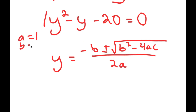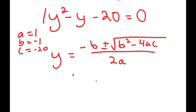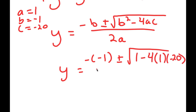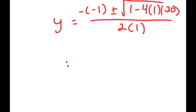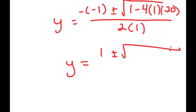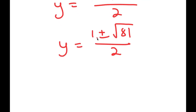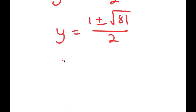The quadratic formula is negative b plus or minus the square root of b squared minus 4ac all over 2a. In this case, a is 1, b is negative 1, and c is negative 20. So I get y equals negative negative 1 plus or minus the square root of negative 1 squared, which is positive 1, minus 4 times 1 times negative 20, all over 2 times 1. This equals 1 plus or minus the square root of 1 plus 80 over 2, which is 1 plus or minus the square root of 81 over 2. The square root of 81 is 9.